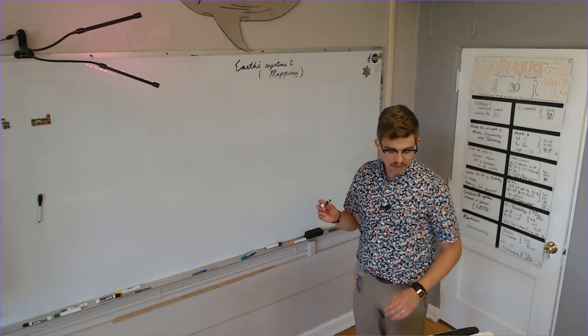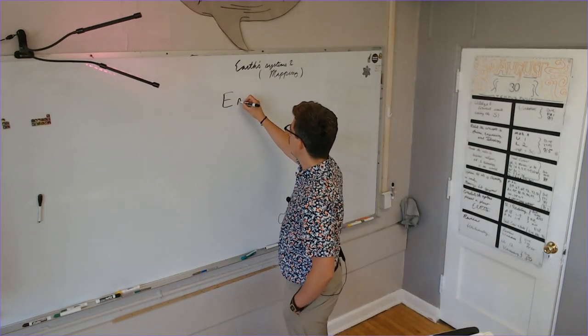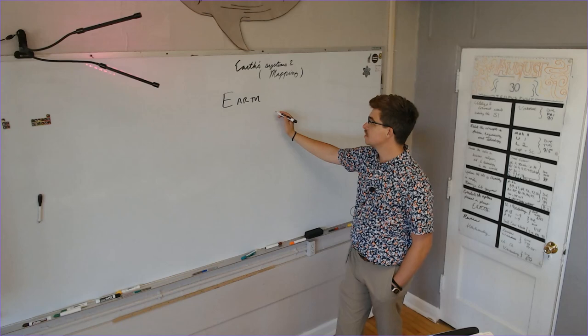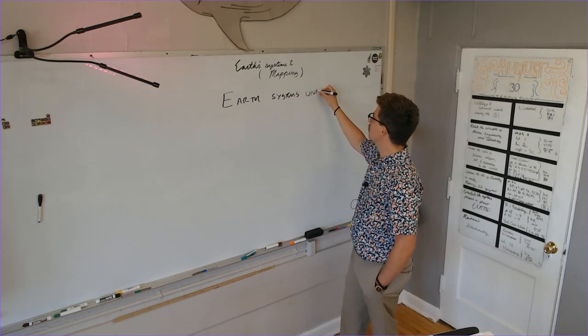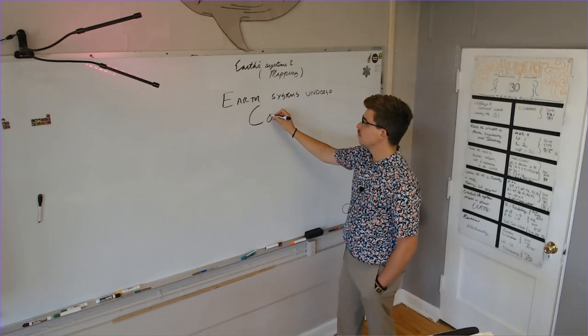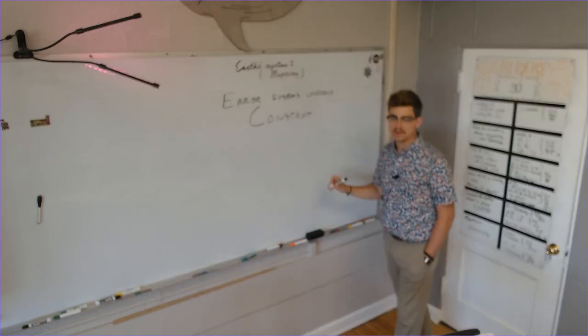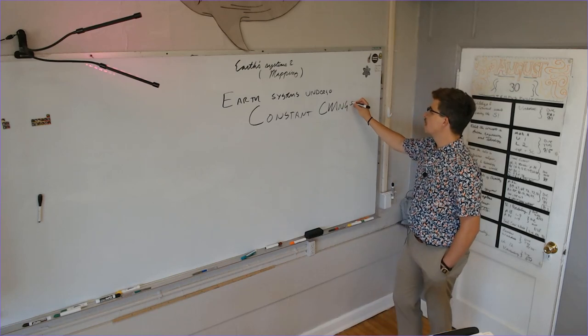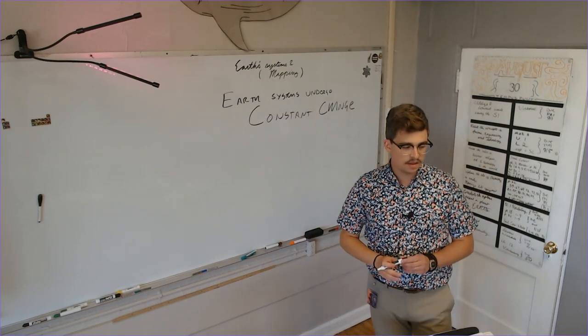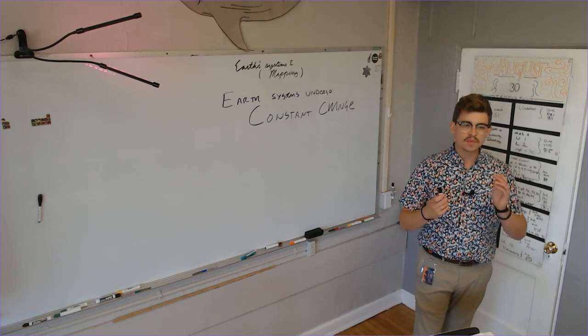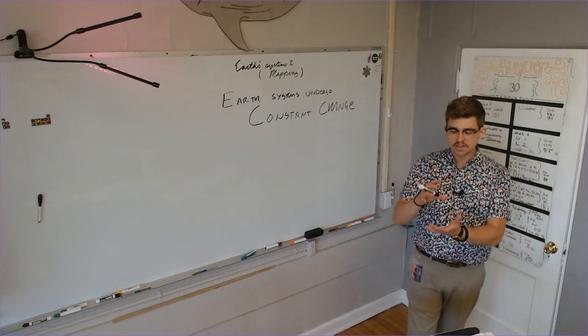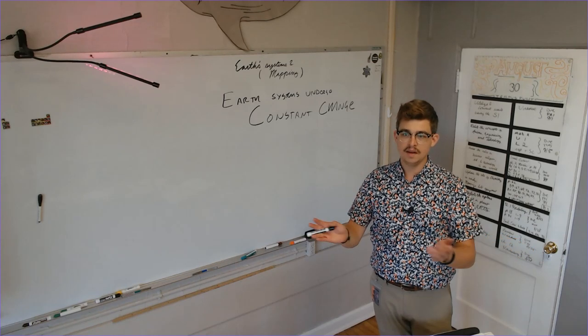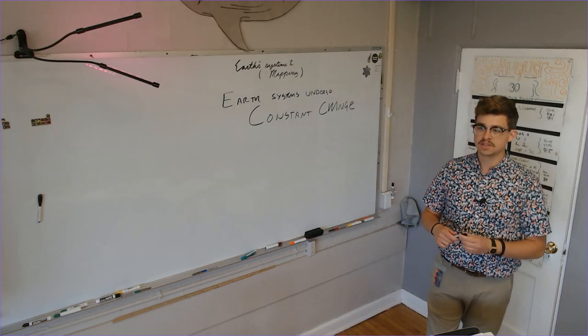The one thing that we need to talk about is the Earth. Earth systems undergo constant change. There's this idea that people sometimes latch onto, which is sometimes called catastrophism, that all of the changes that happened to Earth happened at the beginning of Earth, and then from then on everything's been pretty much the same. And really, nothing could be further from the truth. Things change constantly.